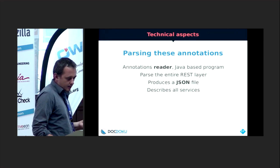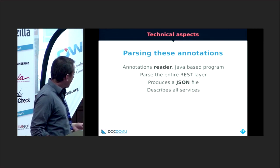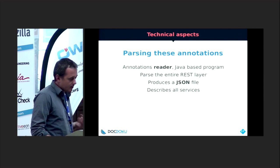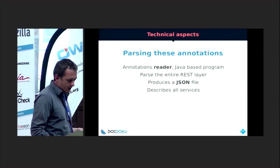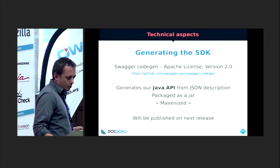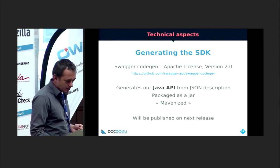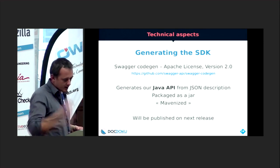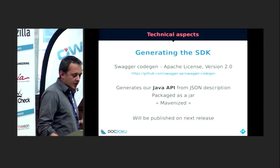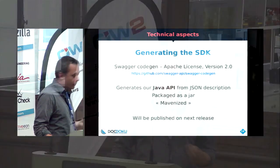Once the JSON file has been produced, we are now able to generate SDKs for many languages. Today we have two SDKs — one in Java and the other in JavaScript. To generate them, we use Swagger Codegen, which is under the Apache license and available on GitHub. It generates our Java API from this description, and it's packaged as a JAR, so you can integrate it into your existing application or directly use the mavenized version. It will be published under OW2.